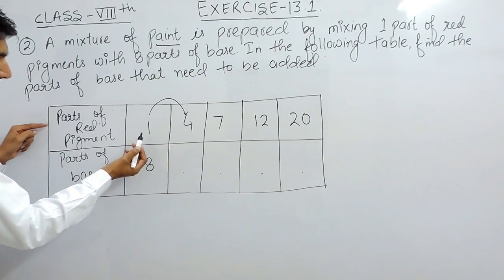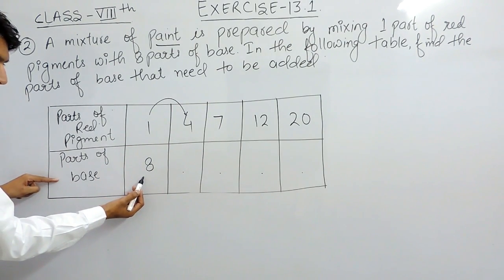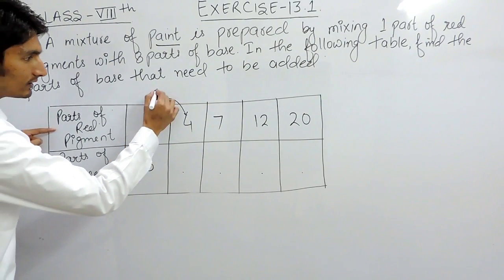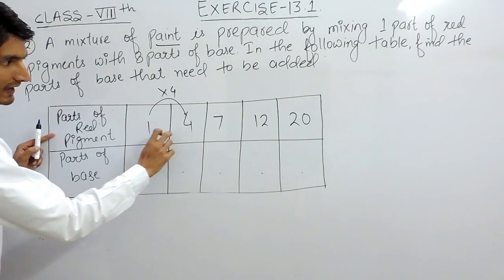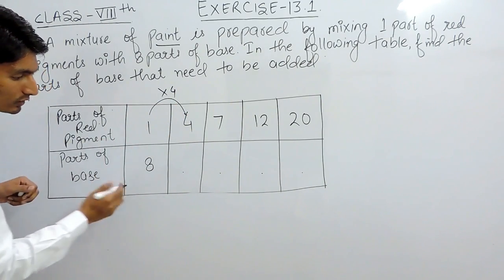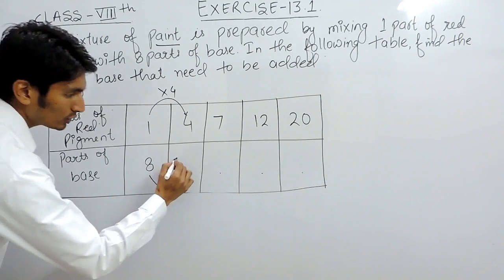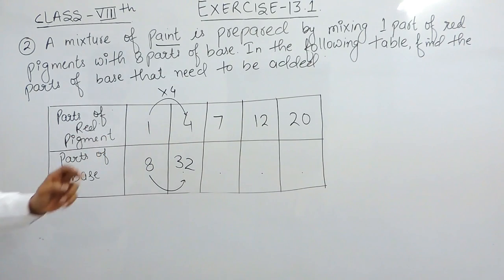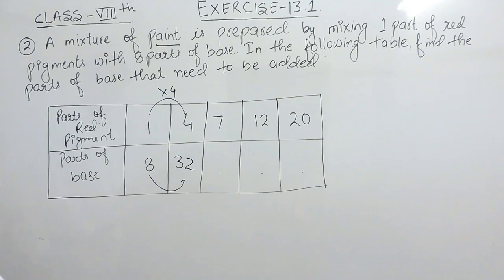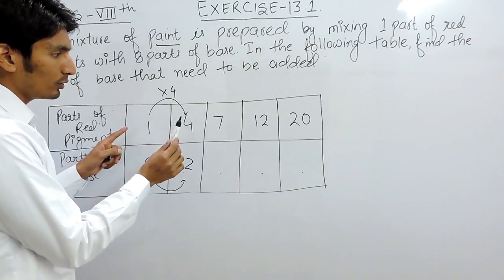If the red pigment is one, then in that case base should be eight. If the red pigment is increased four times — because red pigment goes from one to four, so it is increased four times — so clearly you have to increase the base also four times. So we can say that if you are adding four parts of red pigment, you have to add 32 parts of base.